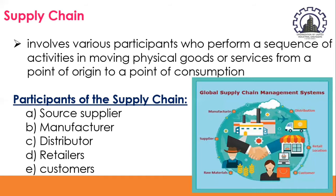First, we have source suppliers, which refer to the different suppliers of your raw materials. Next, we have the manufacturer — the company that manufactures the goods and/or services. Third, we have the distributor, where goods are distributed to big department stores, supermarkets, or grocery stores — we call them wholesalers. We also have retailers, which are small businesses who buy from wholesalers and resell for profit. Examples include sari-sari stores. And finally, we have the customers, or end users of the product.